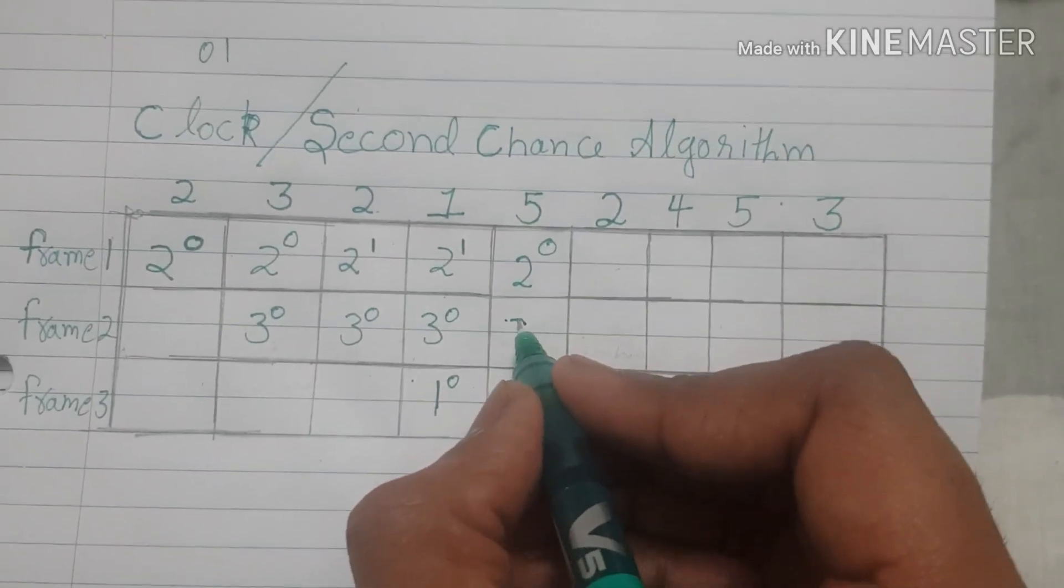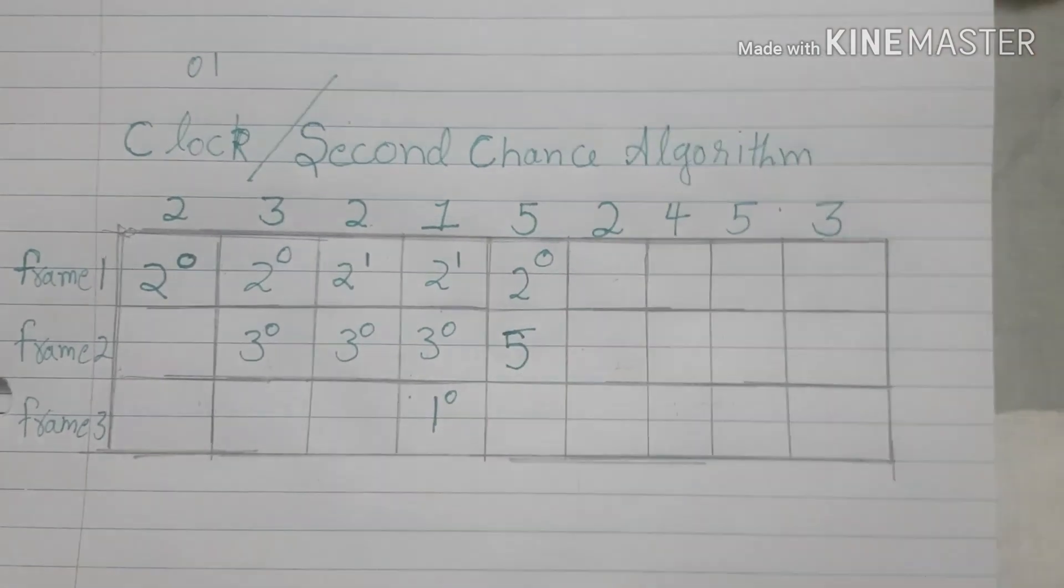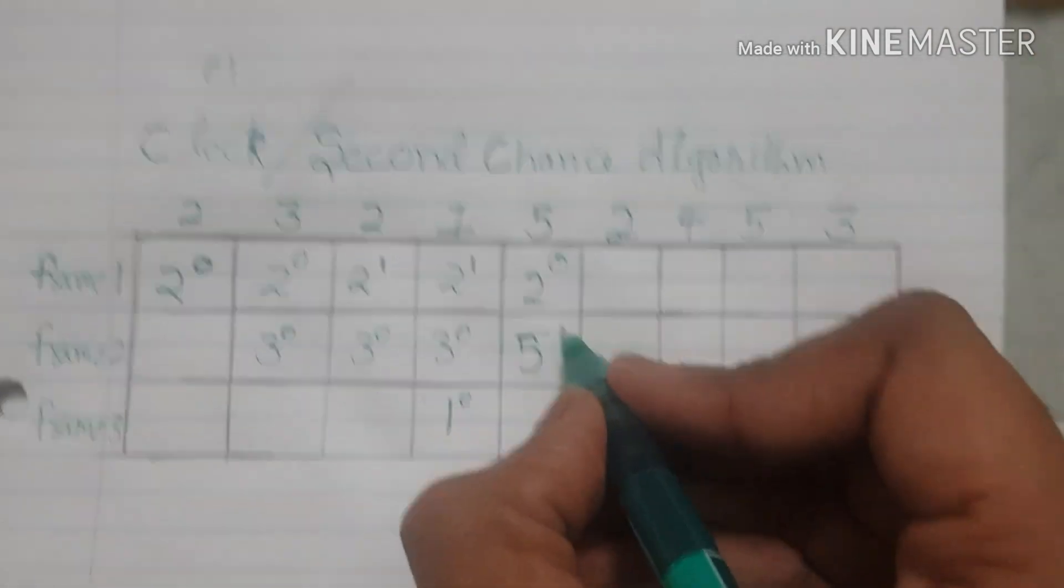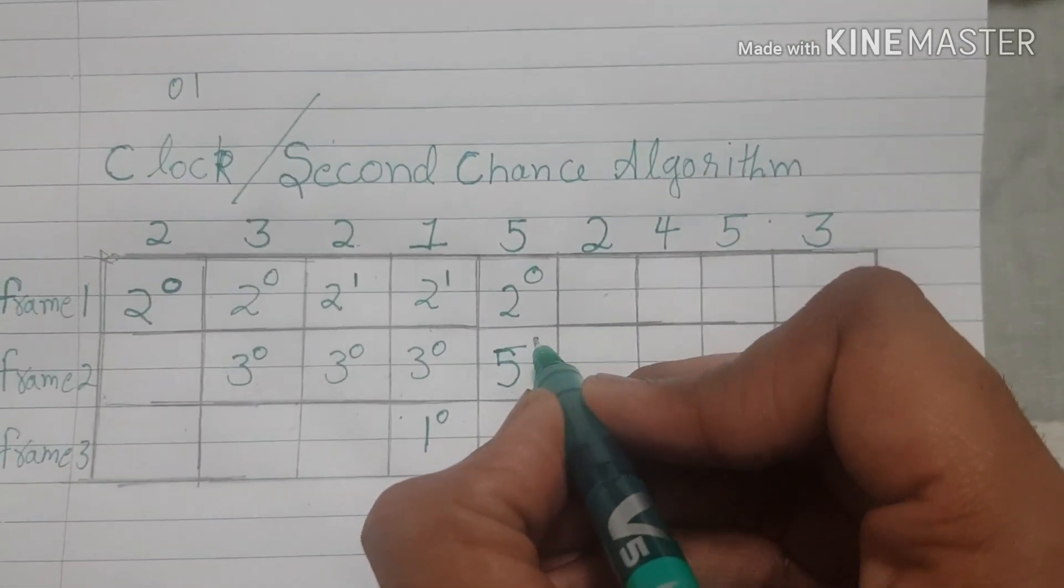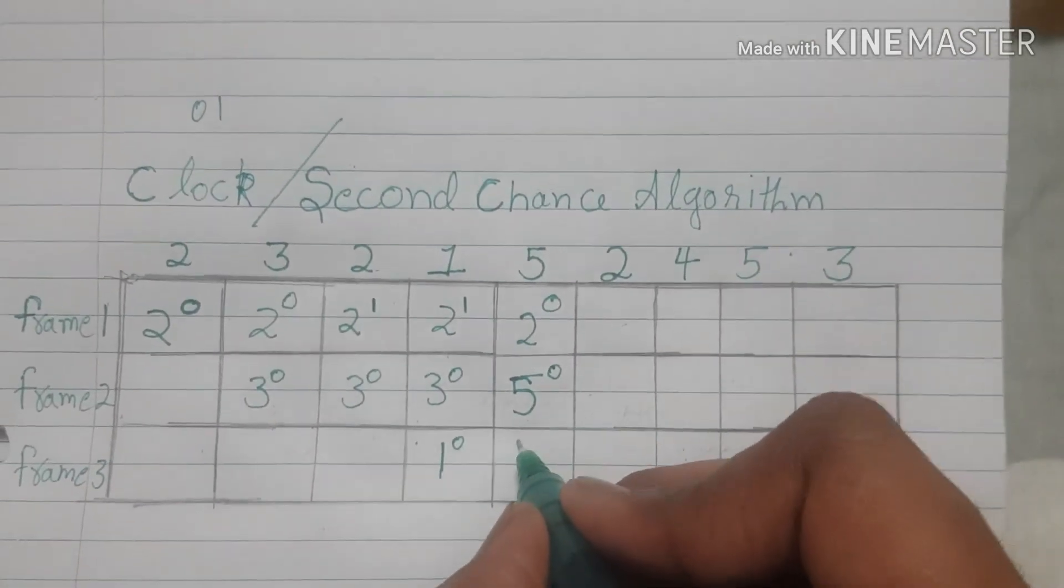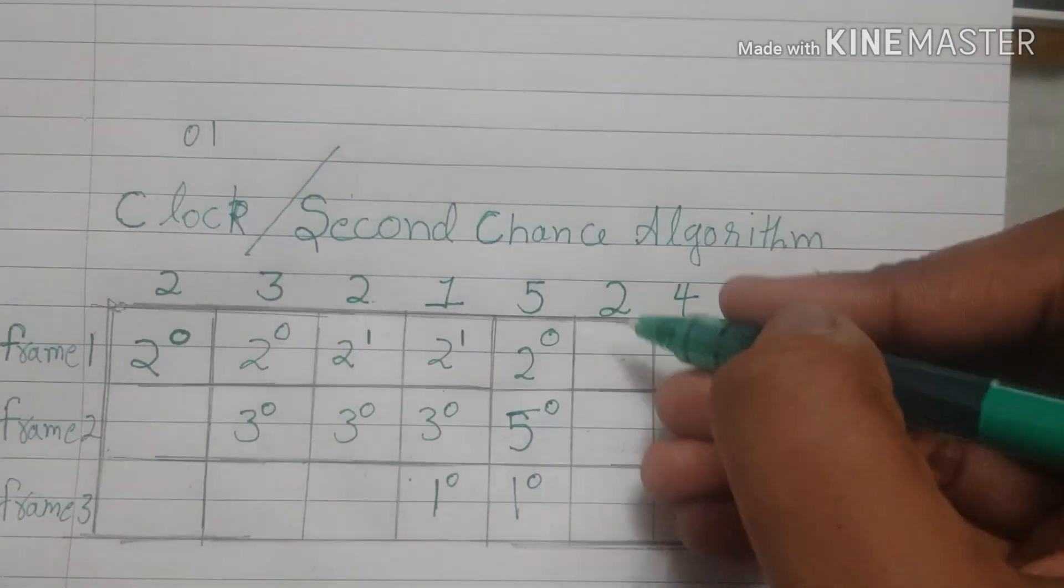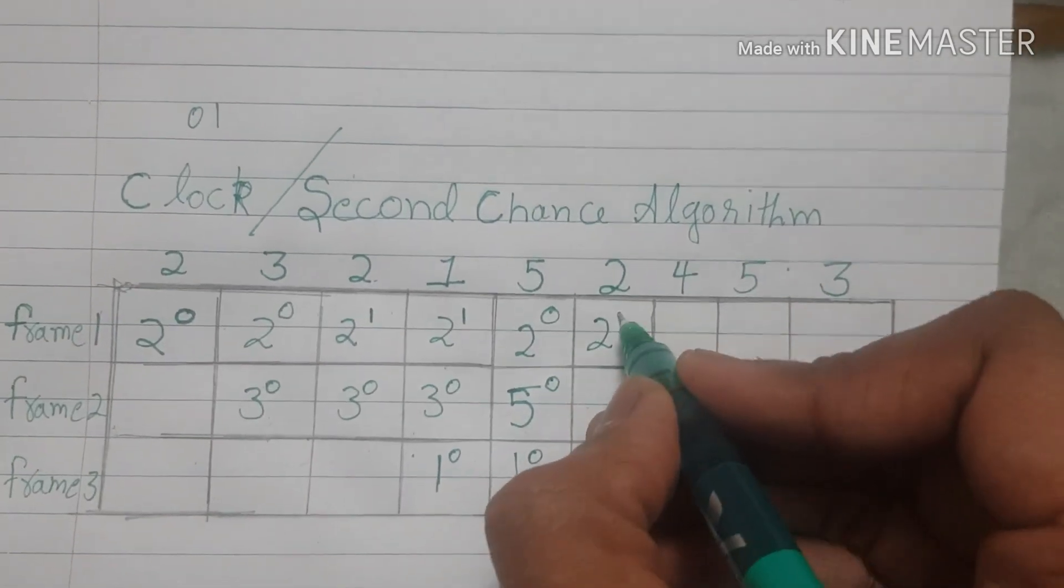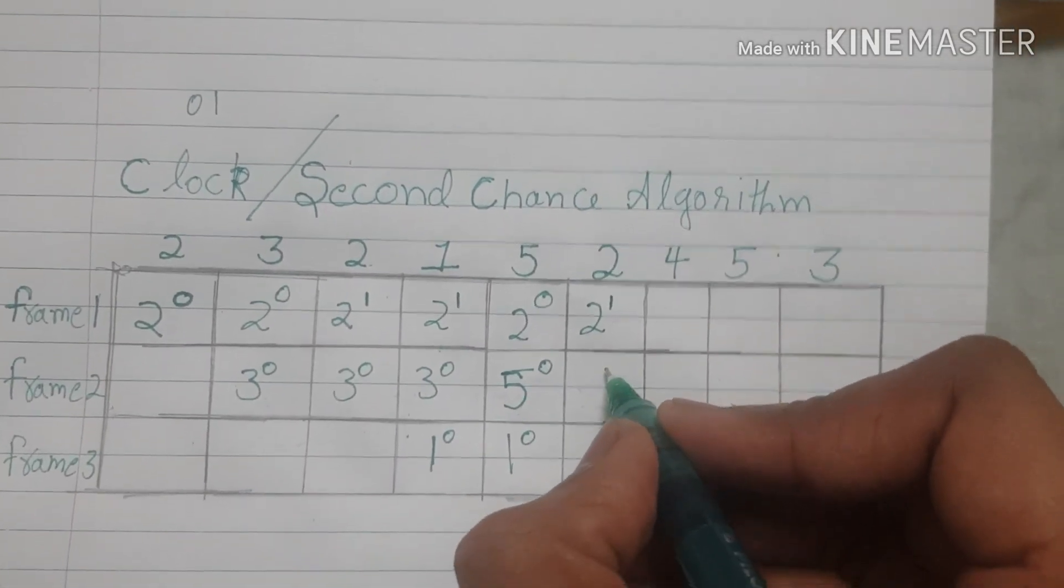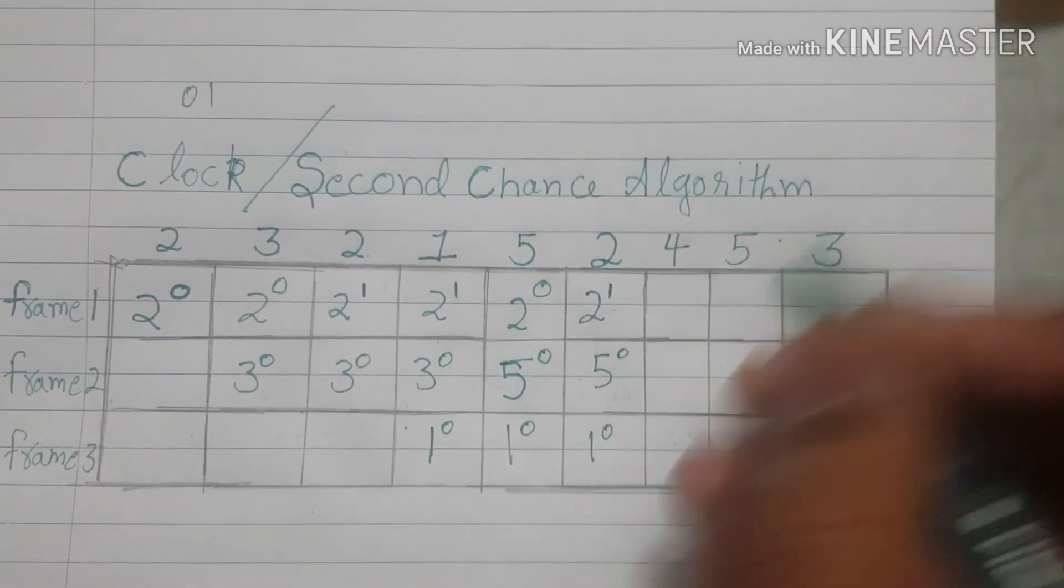We bring in 5 in place of 3 and since it just came in, the reference bit for this is 0 and for 1 is 0 as well. Now once again 2 came in, it's a hit condition, value incremented to 1, 5 to 0 and 1 is already 0.